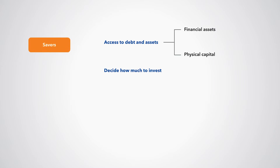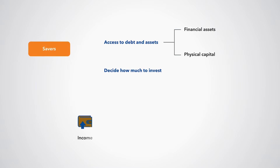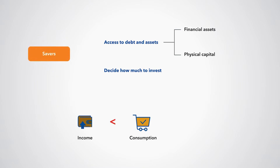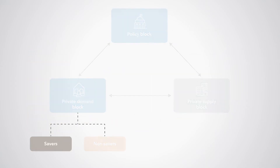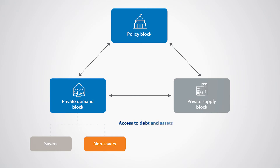That is, if at any time their income is below their desired consumption, they can borrow or withdraw from their assets to consume more than their income. Non-savers do not have access to assets or debt, and therefore are forced to consume their current income in every period.